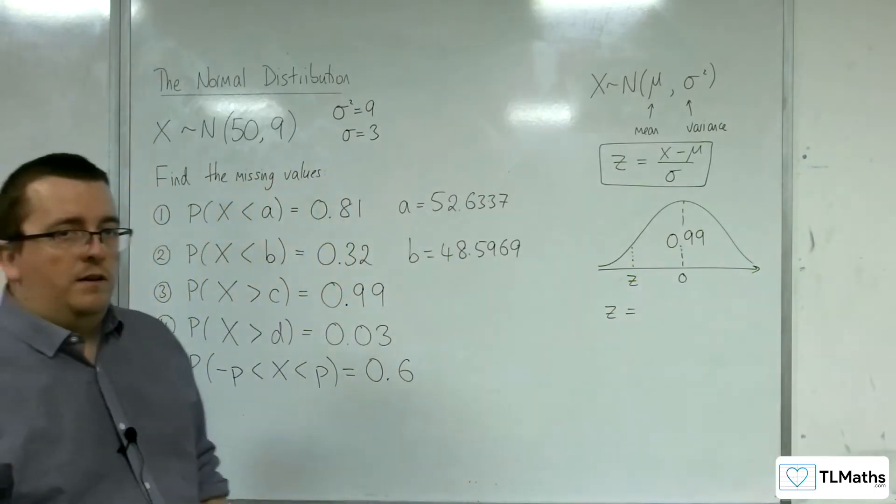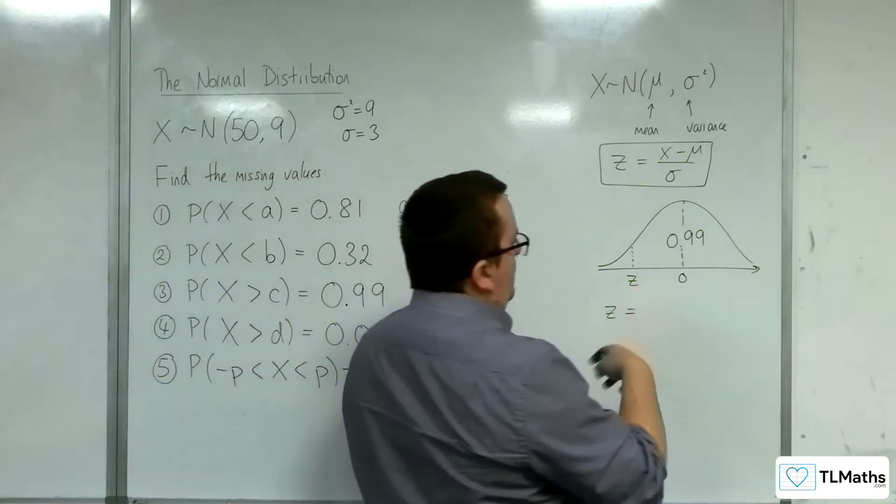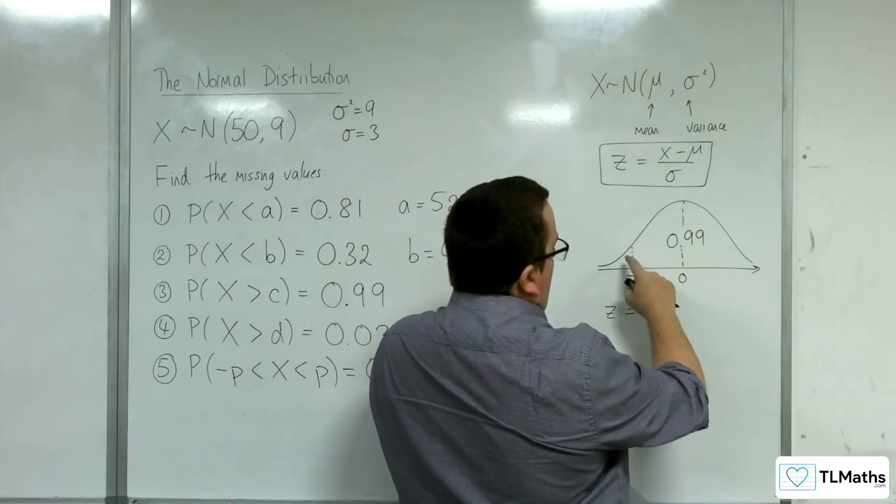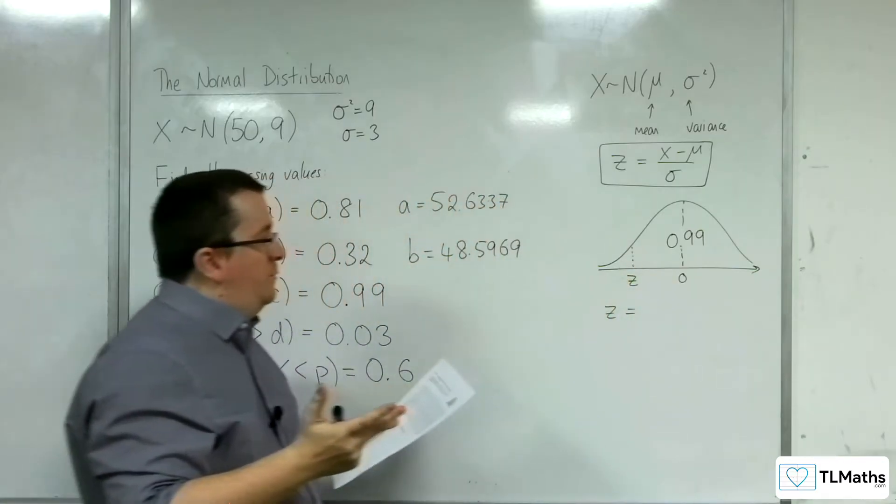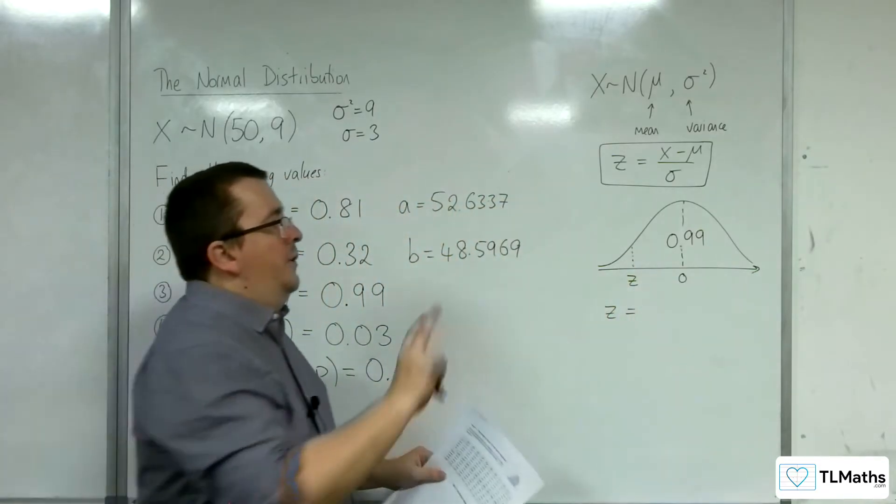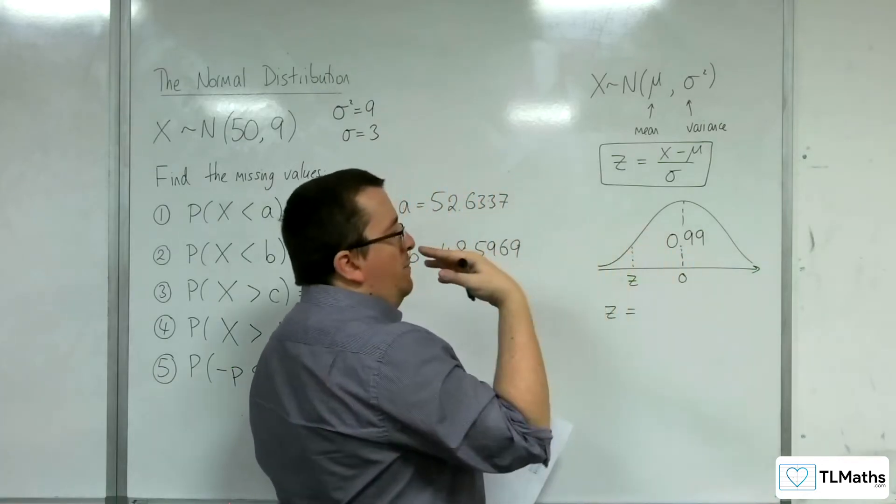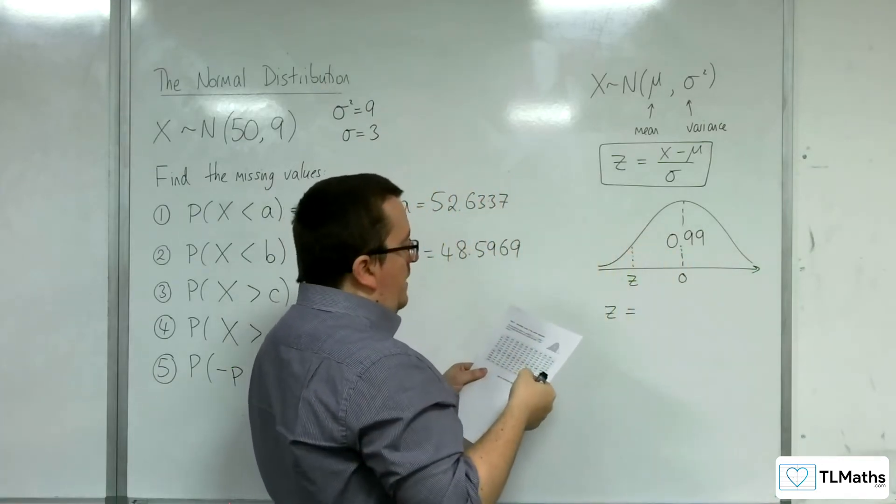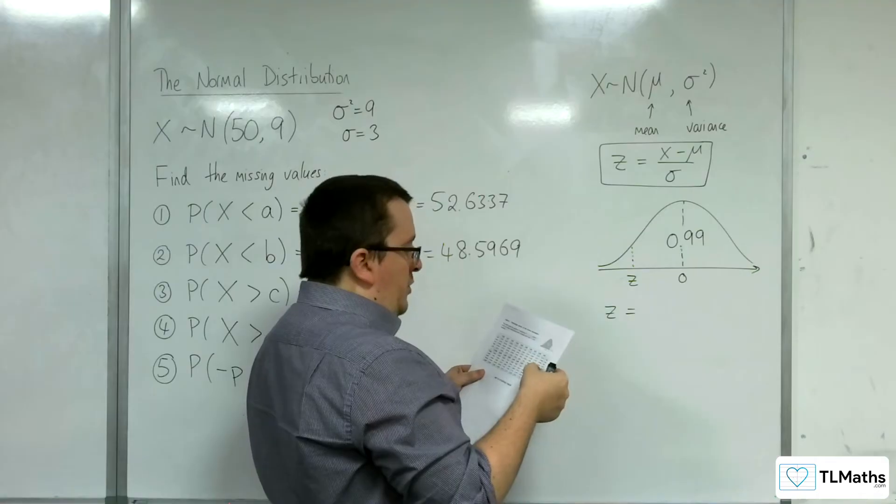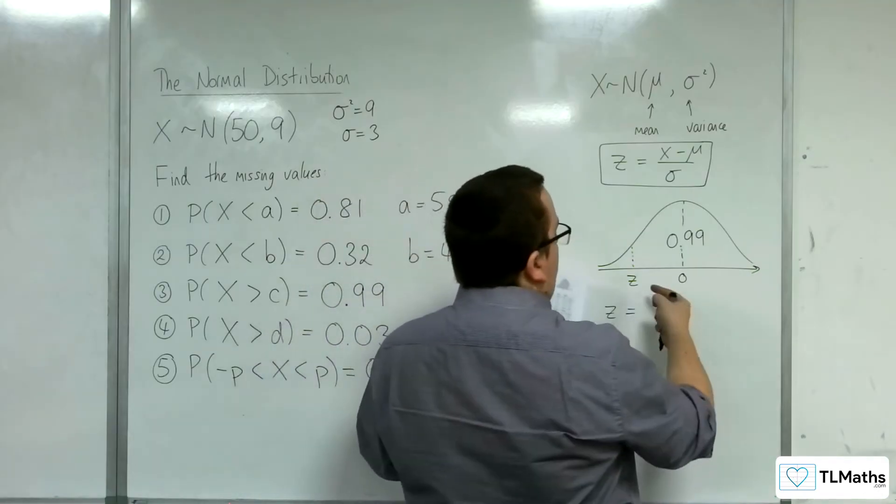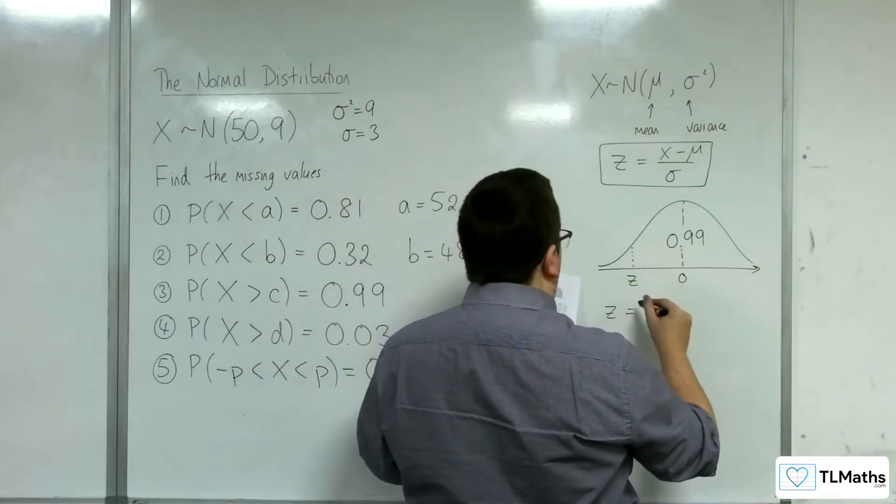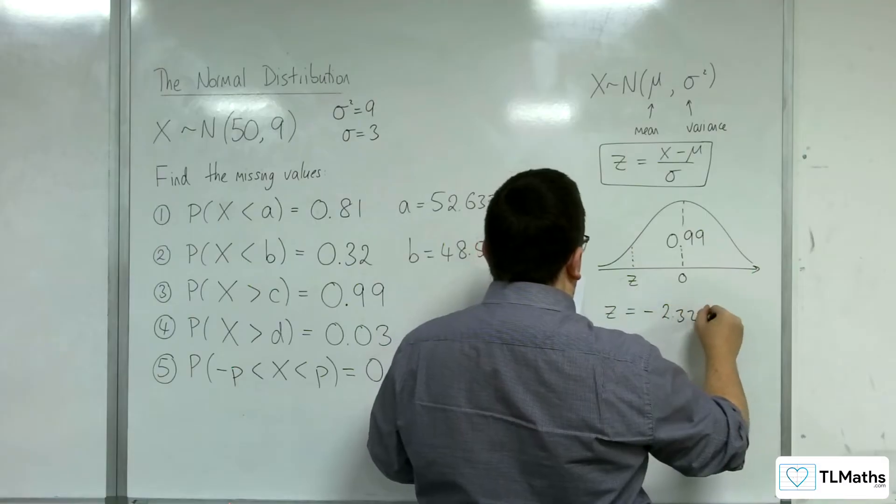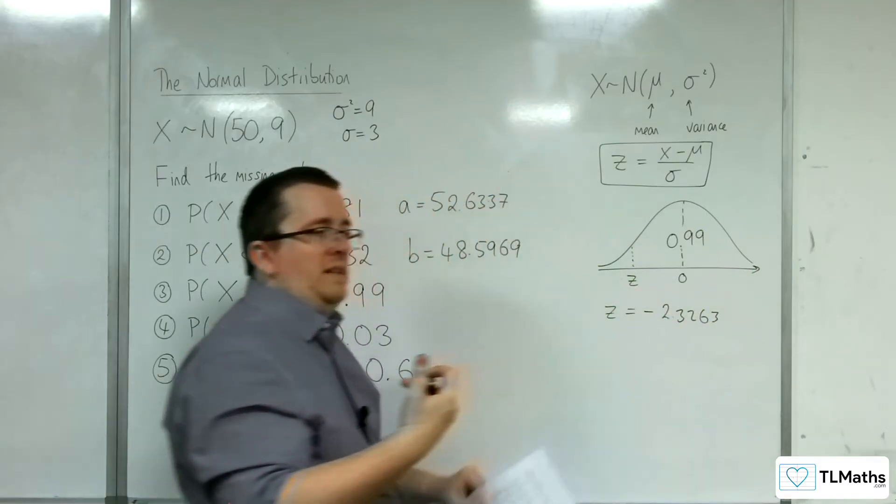Now, I can't look up the area to the left. I can't do that, so 0.01. So thinking about the mirror image, if I looked up 0.99 in here, I will get a positive value, so 2.3263. So z must be the minus of that, minus 2.3263, because of it being the mirror image.